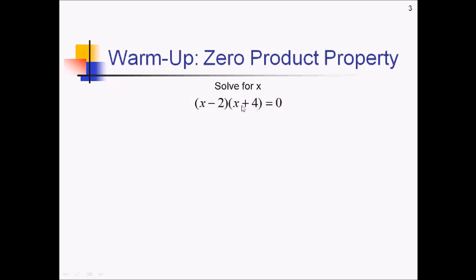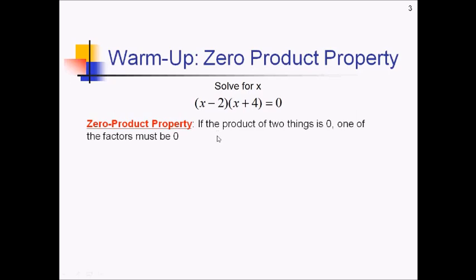So there's a property that will help us here called the zero product property. This property says if the product of two things is zero, one of the factors must be zero. Because the only way to get zero by multiplying is if you're multiplying by zero.